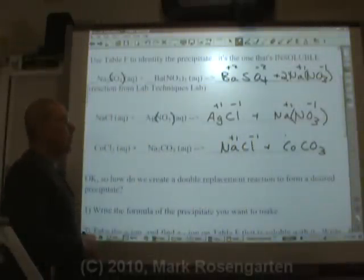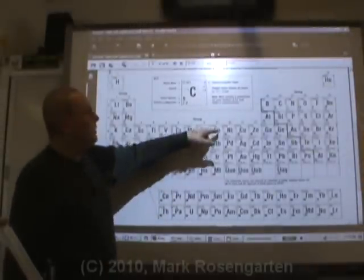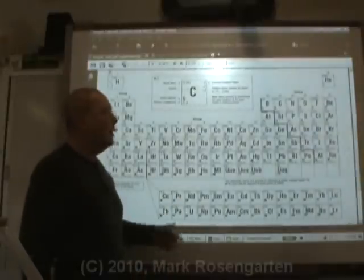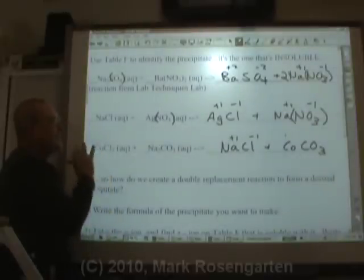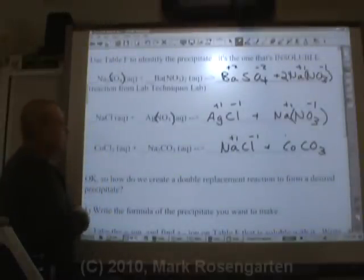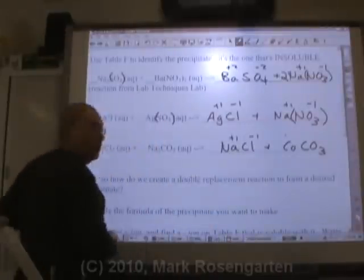What about cobalt carbonate? Well, cobalt has two charges listed on the periodic table, plus two and plus three. How do we know which one to use? Take a look at the charge on this side. This is not a redox reaction. So whatever the charges are on the left, they're going to have the same charges on the right.